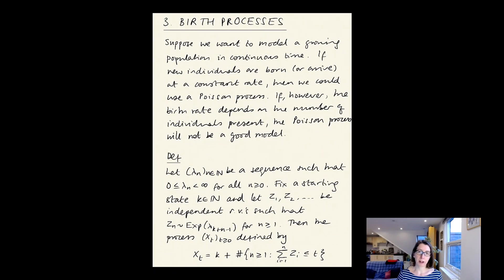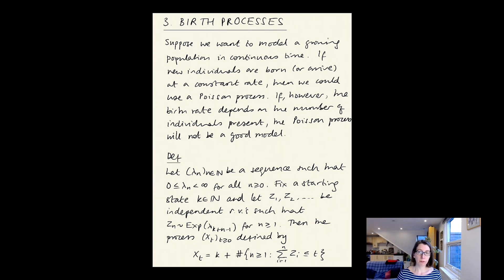This is the first of two videos on the topic of birth processes, which corresponds to chapter three in the lecture notes. Before we turn to our full generalisation of Poisson processes — which will be continuous time Markov chains in the next chapter — we're going to first generalise one aspect of the Poisson process.